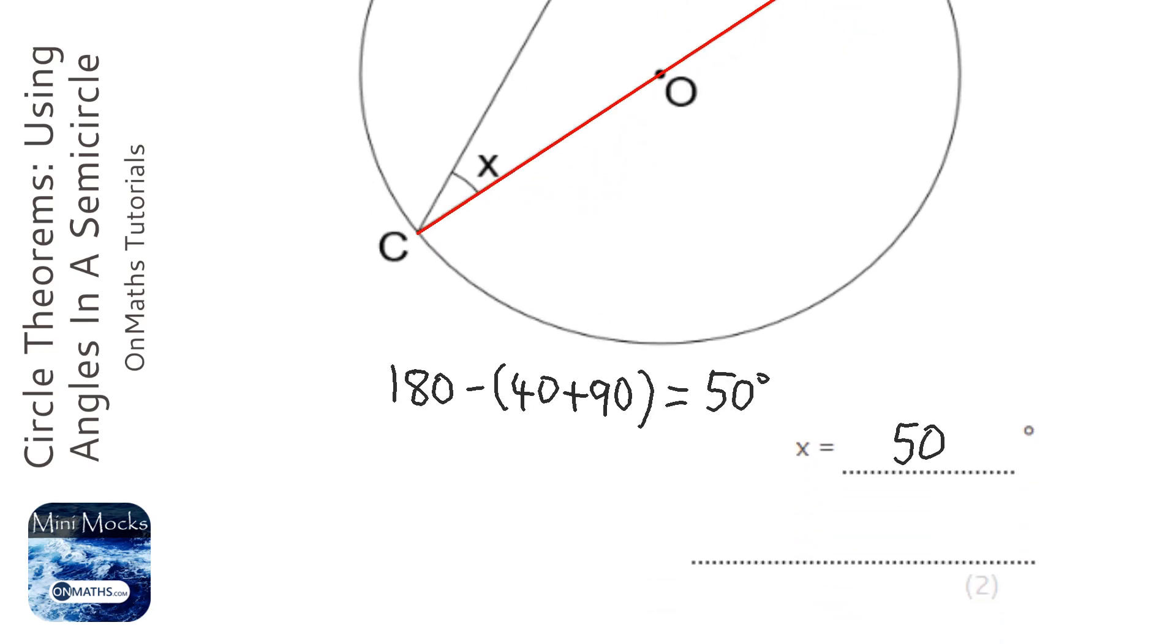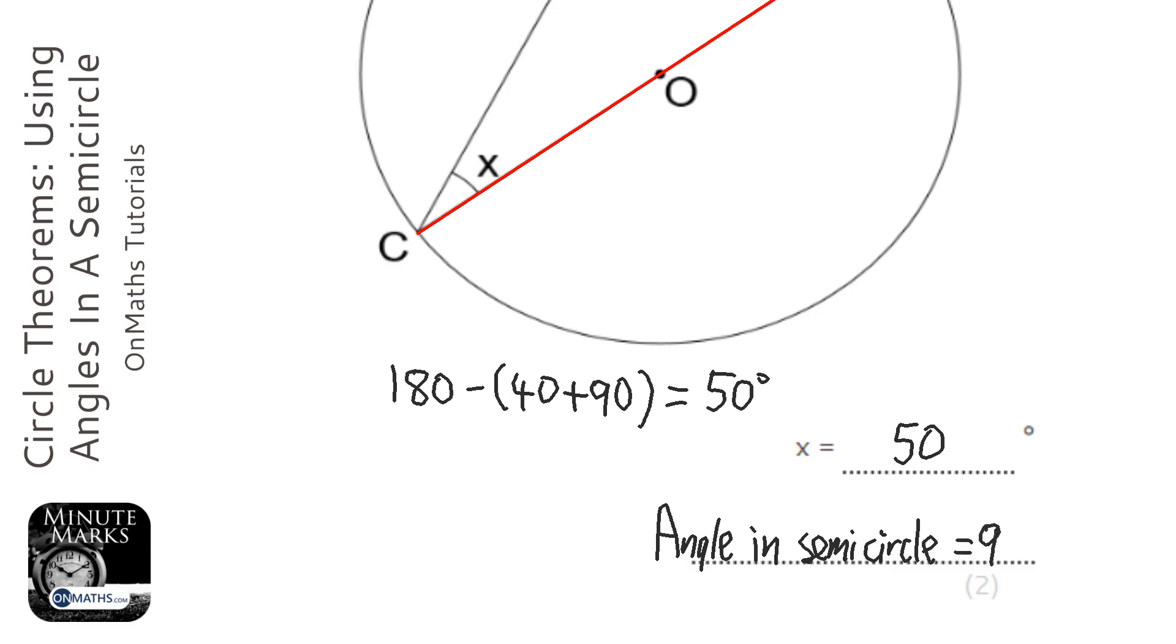So the reason is angle in semicircle or angle from diameter equals 90 degrees. Anything along those lines, anything that identifies that the angle from that diameter or angle in the semicircle is 90 degrees will give you the mark.